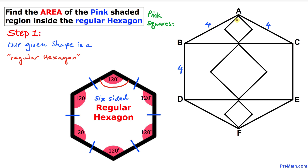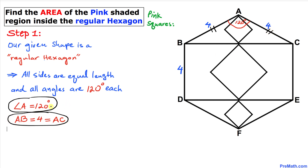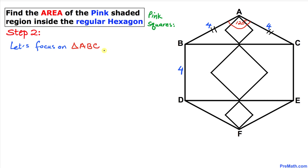So angle A is going to be 120 degrees. Line segment AB is going to be the same as line segment AC, and both of them equal 4.